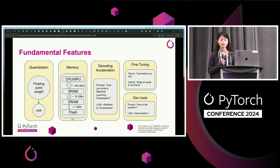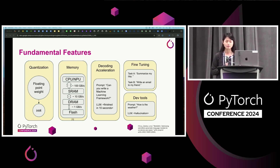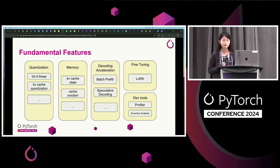Let's take a look at the fundamental features needed to enable LLMs on edge. First, quantization — LLM means the weights are large, so the first optimization we do is quantization to compress the model size. Second, we need to optimize memory — bandwidth among different memory regions is very different and we need to plan carefully, especially when memory-bound. Decoding acceleration — users want results right after typing the prompt. Fine-tuning — we'd like to fine-tune different LoRA adapters for different tasks like summarization or writing an email. And dev tools — it's a pain to debug accuracy and profile, especially for LLMs. Example techniques include 4-bit quantization, KV cache, batch prefill, LoRA, and profiler.